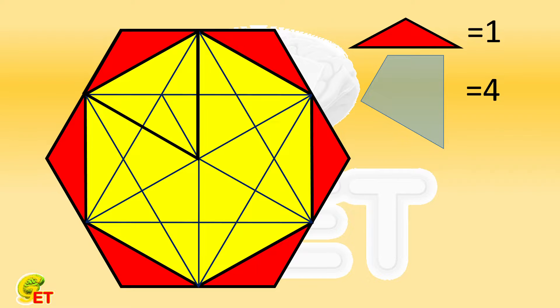As we said, the red regular hexagon is composed of 6 such quadrilaterals, so the area of the red regular hexagon is 4 times 6, which equals 24. Then, the area of the yellow regular hexagon is 24 minus 6, which equals 18.